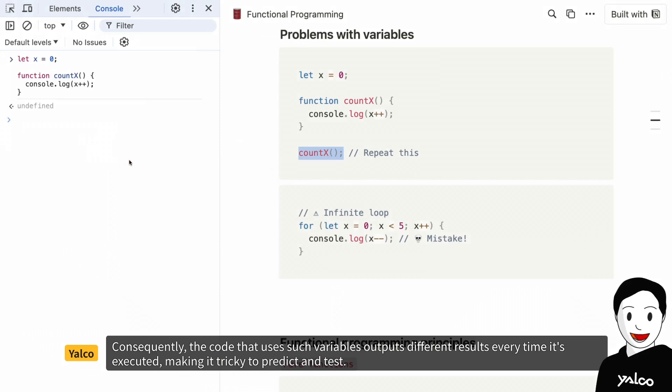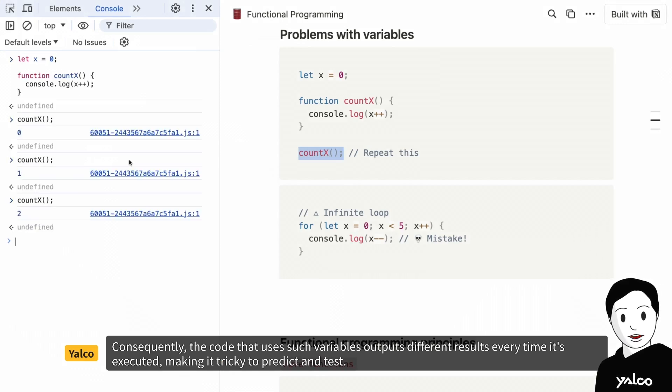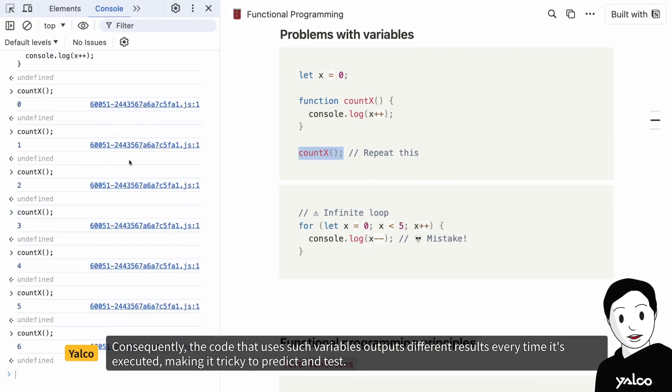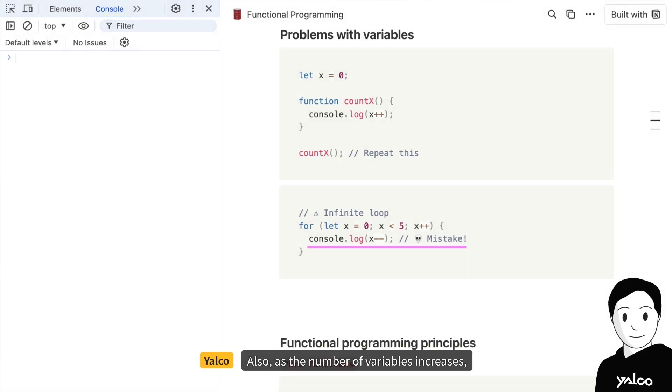Consequently, the code that uses such variables outputs different results every time it's executed, making it tricky to predict and test.